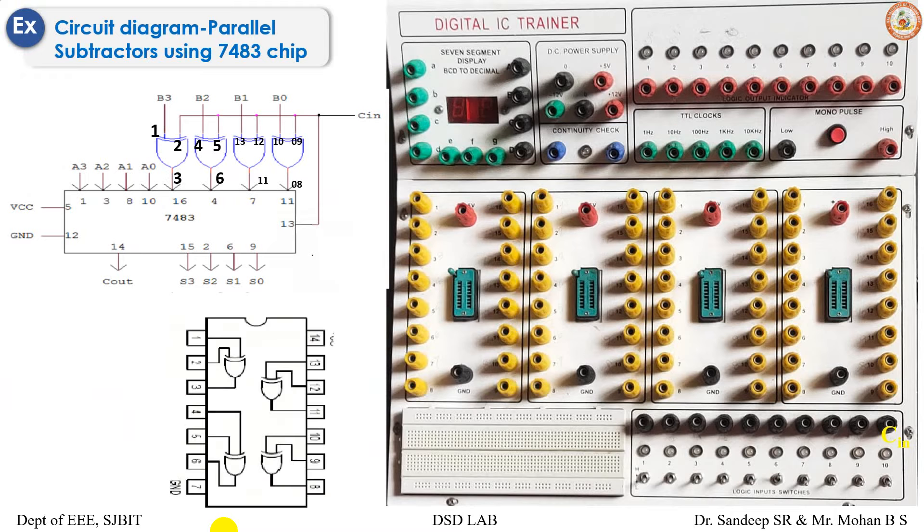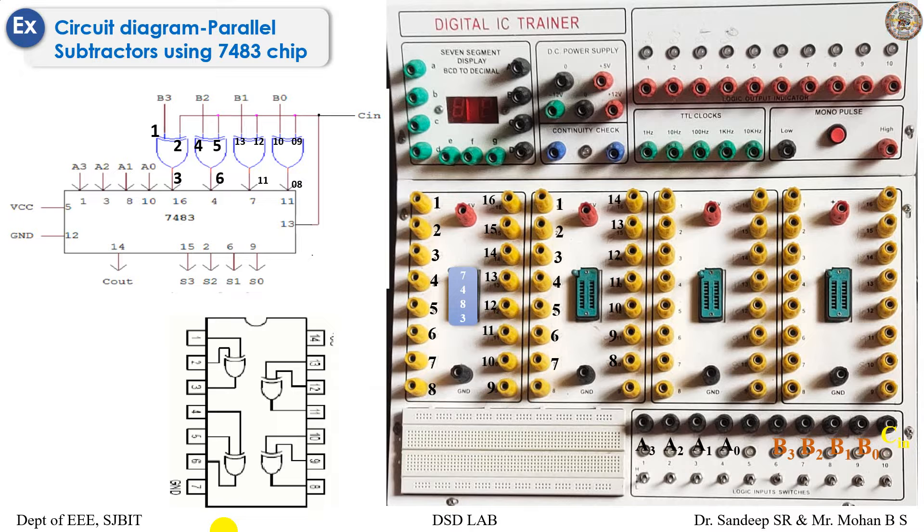The pin diagram is as shown here with 7483 chip - a 16 pin IC 7483 and then your XOR gate.